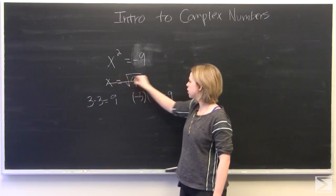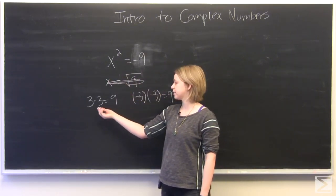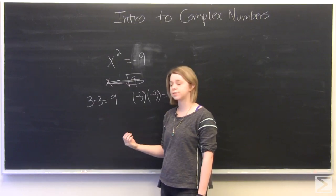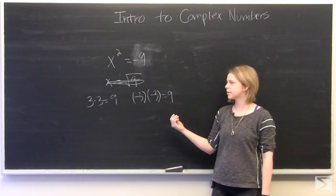3 times 3 doesn't work because 3 times 3 is still equal to positive 9. And negative 3 times negative 3 is also still equal to positive 9.